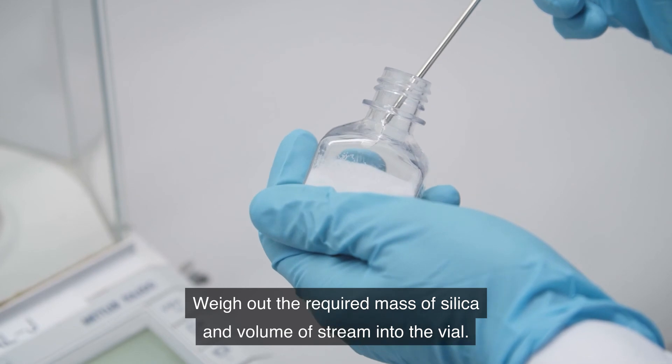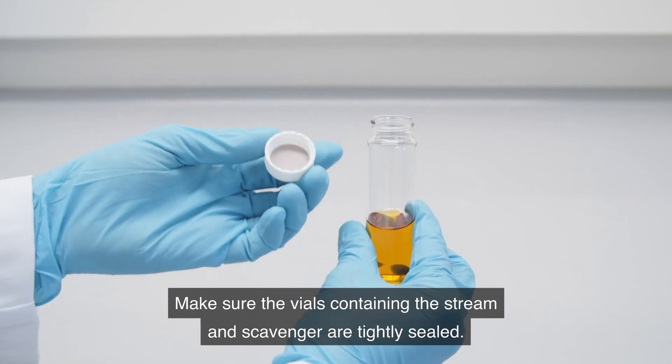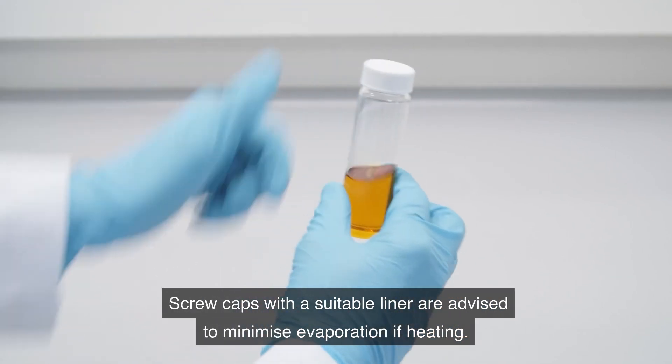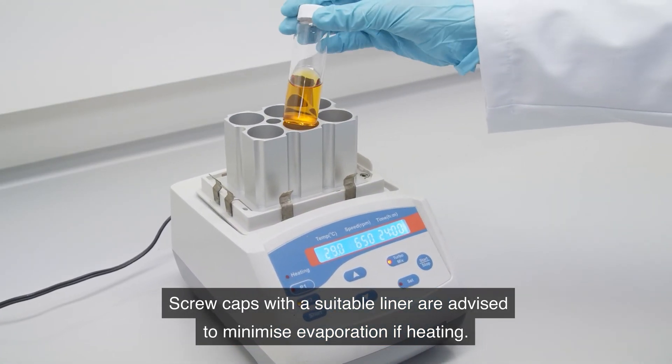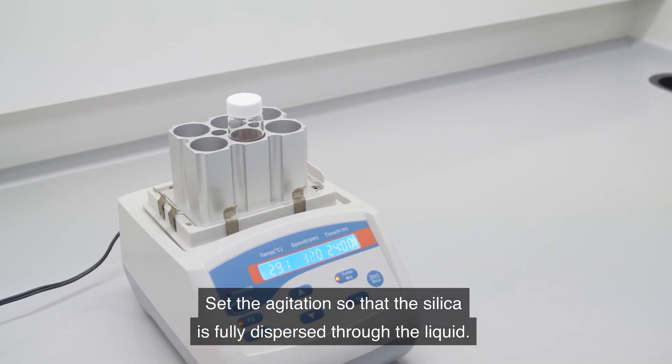Weigh out the required mass of silica and volume of stream into the vial. Make sure the vials containing the stream and scavenger are tightly sealed. Screw caps with a suitable liner are advised to minimise evaporation if heating. Set the agitation so that the silica is fully dispersed through the liquid.